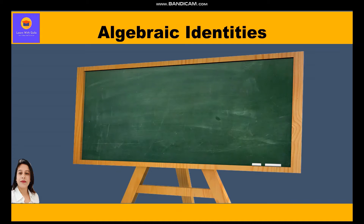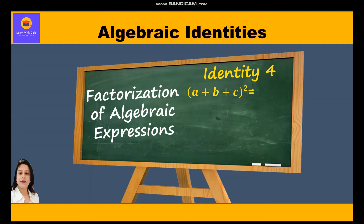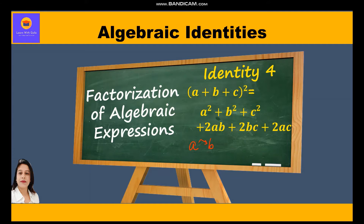Hello everyone. In this video on algebraic identities, we are going to learn about factorization of algebraic expressions using identity 4. Our identity 4 is (a + b + c)² = a² + b² + c² + 2ab + 2bc + 2ca. To remember it, just read the cross terms in order: 2ab, then 2bc, and then 2ca.